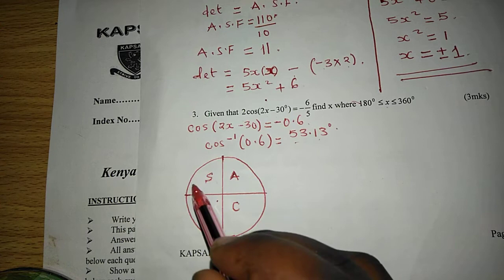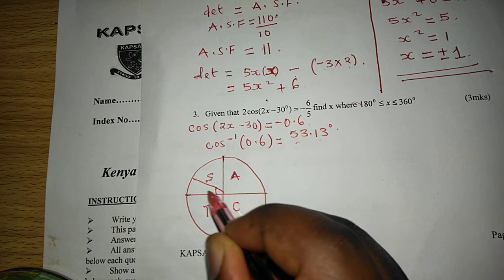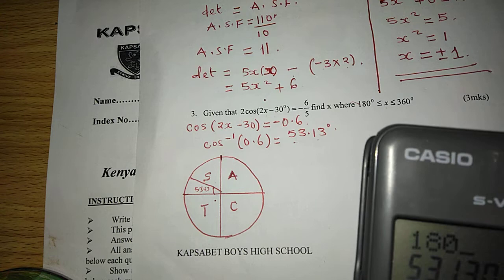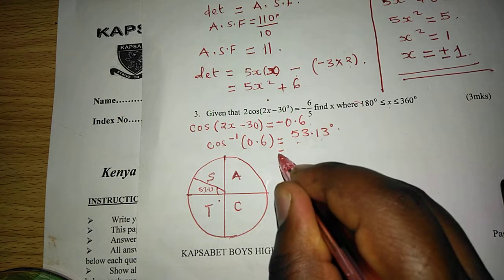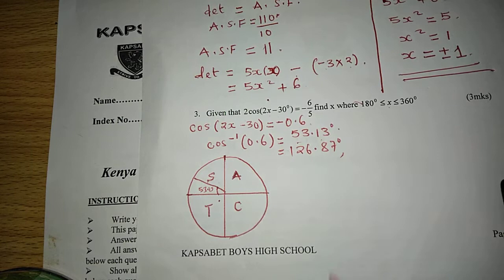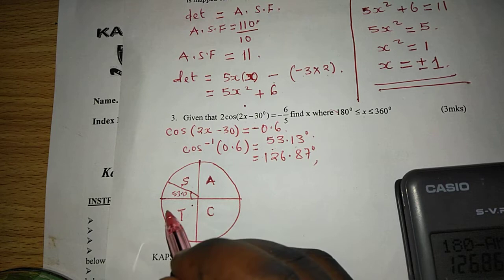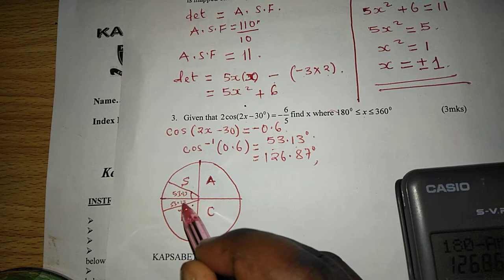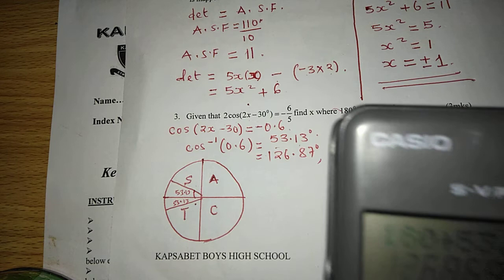Such that in the second quadrant, 53.13 means 180 minus 53.13. So the first angle will be 126.87 degrees. And the next one is going to be in the third quadrant. So 53.13 in the third quadrant is 180 plus 53.13, such that the angle is 233.13.